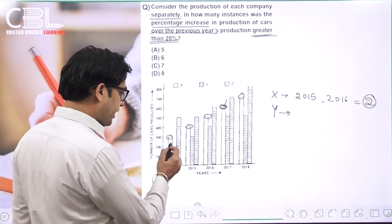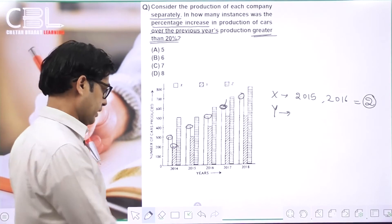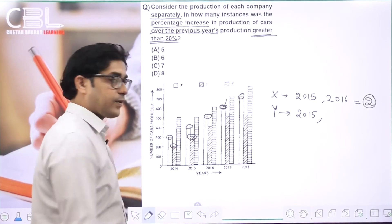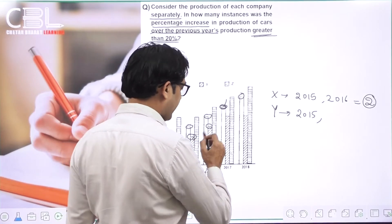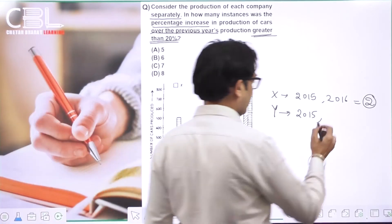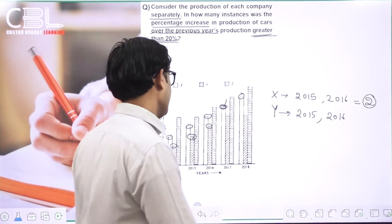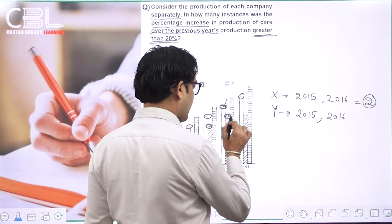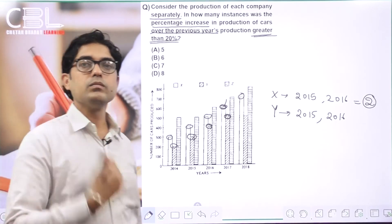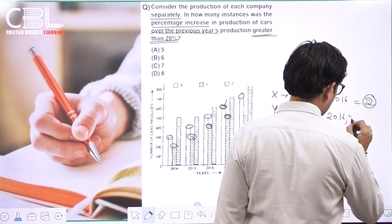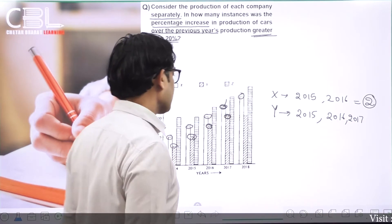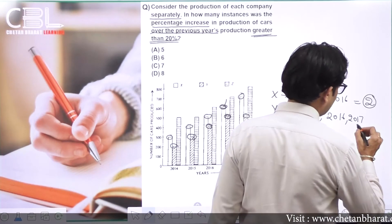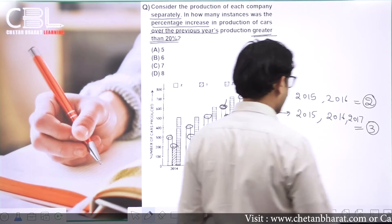Company Y: 2014 में 200, 2015 में 300। 200 का 20% = 40, threshold = 240। 300 > 240 — more than 20%। 2016 में 400। 300 का 20% = 60, threshold = 360। 400 > 360 — more than 20%। 2017 में 500। 400 का 20% = 80, threshold = 480। 500 > 480 — more than 20%। 2018 में value 500 = equal, no increase। Company Y: 3 instances।